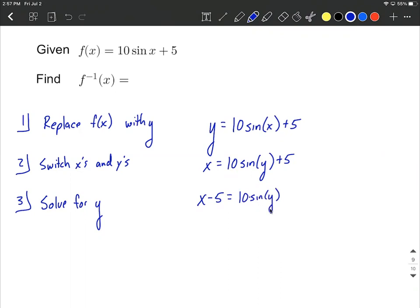So the next thing I want to do to isolate the sine of y is to move the 10 to the other side by using division. So I'm going to divide both sides by 10. So now we're at x minus 5 all divided by 10 equals the sine of y.